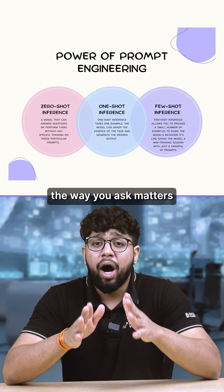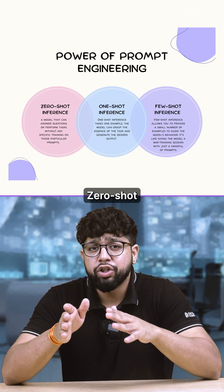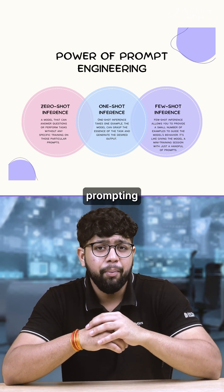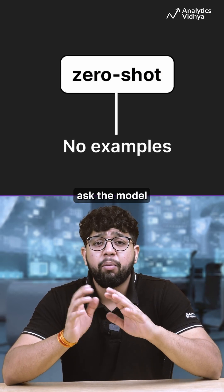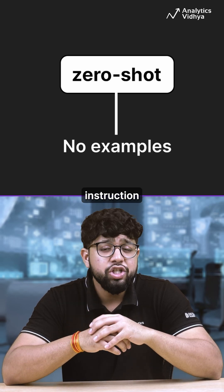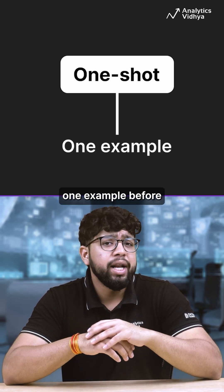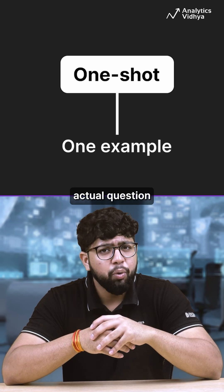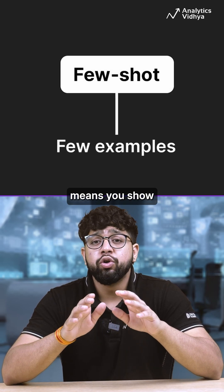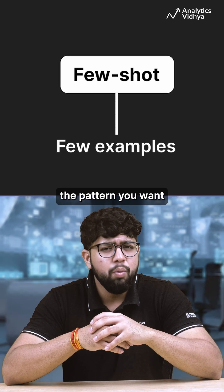In AI, the way you ask matters. There are three main styles: zero-shot, one-shot, and few-shot prompting. Zero-shot is when you ask the model to do something with no example, just a clear instruction. One-shot means you give one example before your actual question, and few-shot means you show a few examples, teaching the model the pattern you want.